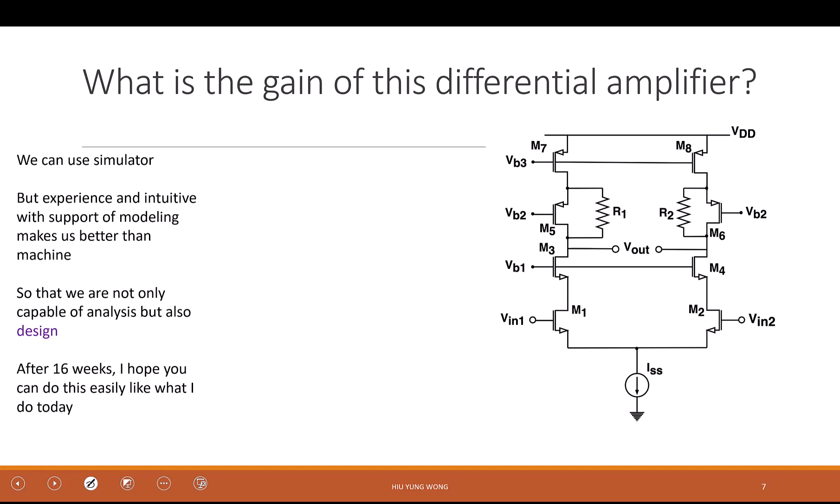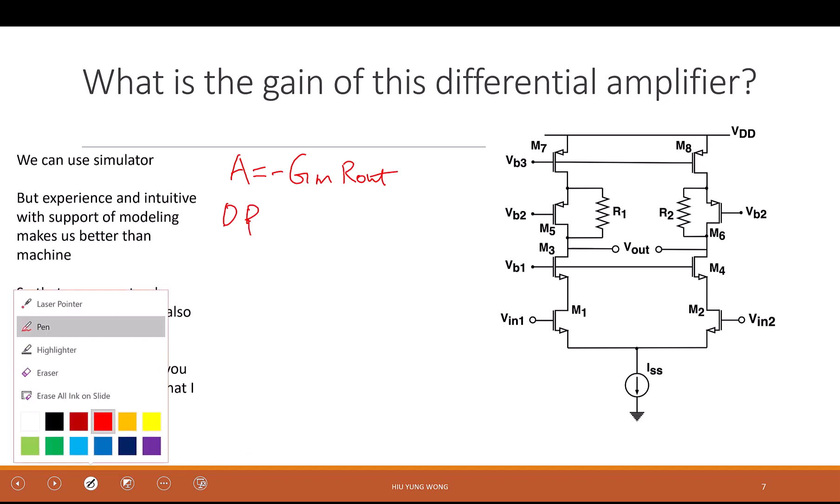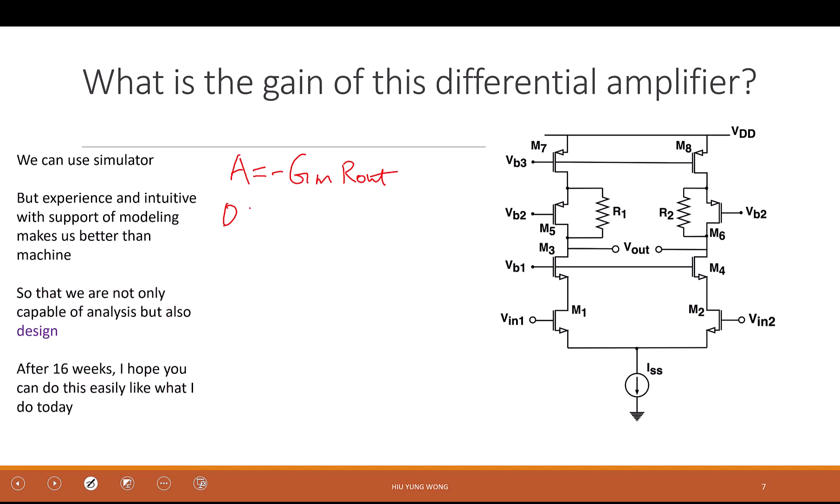For example, looking at this, I already know that in EE124, that is this class, the gain is going to be negative capital Gm times Rout. What is capital Gm? I know every circuit must be the overall transconductance times the overall output impedance. You are going to learn this, how to find the overall transconductance. But I already know what the gain is: negative capital Gm Rout. Now I also know that this is a differential pair, differential circuit, and I'm working on small signal. And I'm also told that this is an absolutely symmetric circuit.